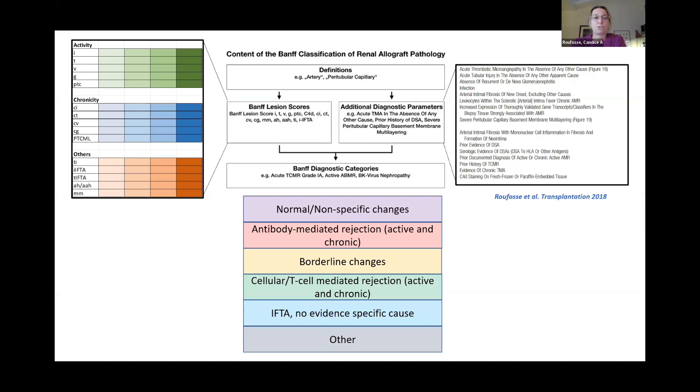So depending on the various thresholds that you need to reach a diagnosis of rejection, you can combine Banff scores of i, t, v, g, ptc, etc., to reach diagnoses of borderline T-cell mediated rejection, antibody-mediated rejection.